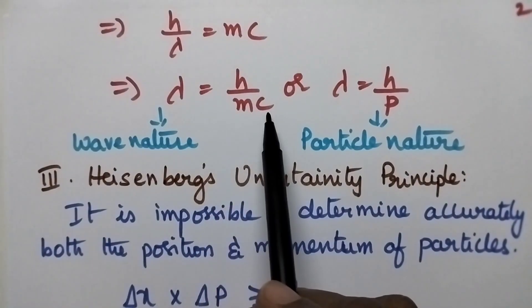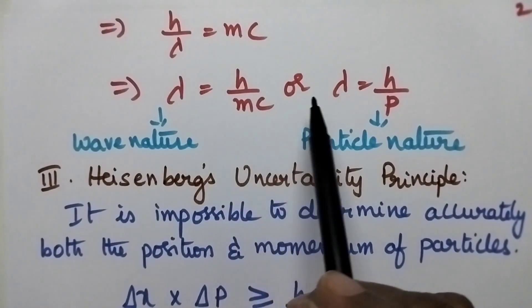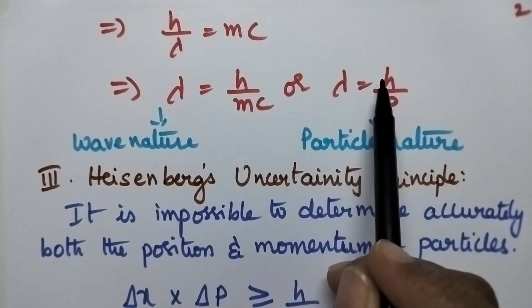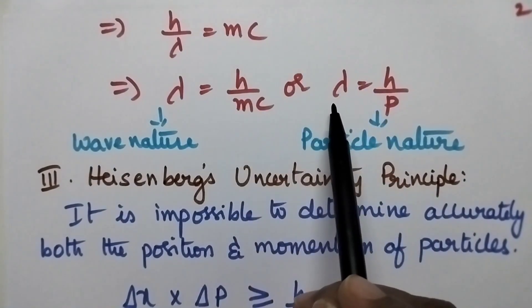Mass into velocity is nothing but momentum, so it can also be written as lambda equals h by p. This is called de Broglie's wave equation.